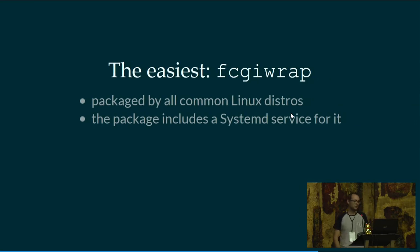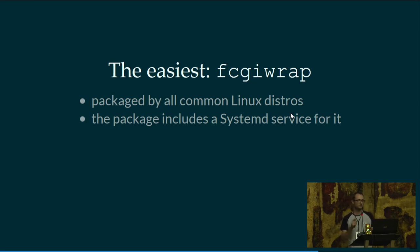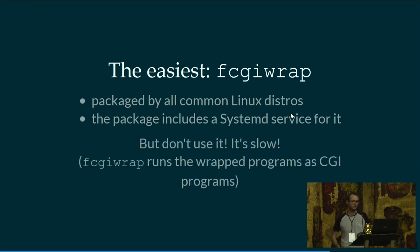So how do you start the processes? How do you handle the life cycle of your FastCGI application? There is a very easy solution you find when you read documentation or Google 'FastCGI plus Nginx' — it's packaged for a lot of Linux distros and has a systemd service within the package, so very easy to set up. But don't use it, because it's very, very slow. Despite being called FastCGI, it will actually run your applications as a CGI program — one process per request. Very slow. Don't use it.